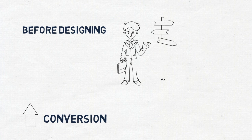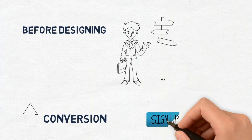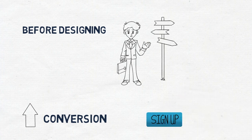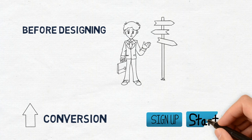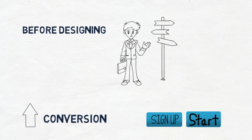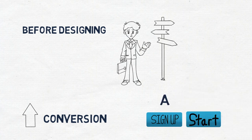Heatmaps should be used during the discovery phase of your conversion rate optimization campaign. They are meant to inform A/B tests on changes to page layouts and functionality to better match users' preferences.